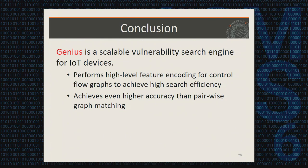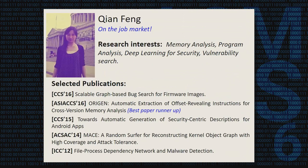In conclusion, GENIUS is a scalable vulnerability search engine for IoT devices. It performs high-level feature encoding on control flow graphs to achieve high search accuracy, and achieves even higher accuracy than pairwise graph matching. The lead author is on the job market, so if you are an employer and interested, please talk to her directly.